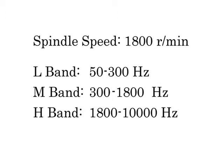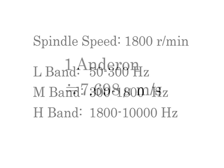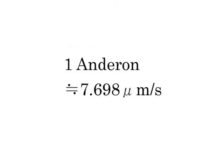The vibrations in the range from 50 Hz to 10 kHz are divided into three bands: L, M, and H. The enderon data are obtained in each of the three bands. In that condition, one enderon is equal to approximately 7.698 micrometers per second.